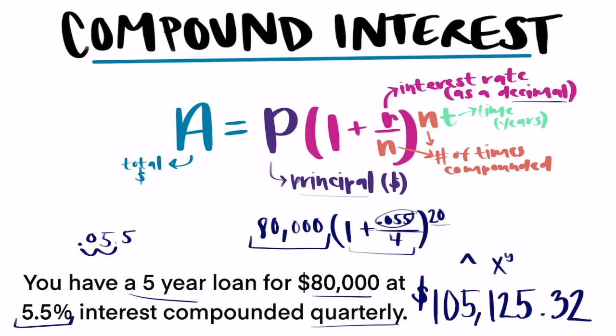Like I said earlier, if you wanted to figure out how much of that was just the interest, you would go ahead and subtract the principal, which was $80,000. And that would get you how much you spent in interest over those five years.